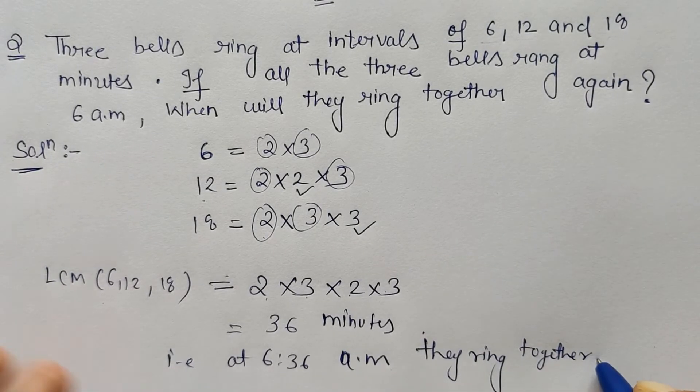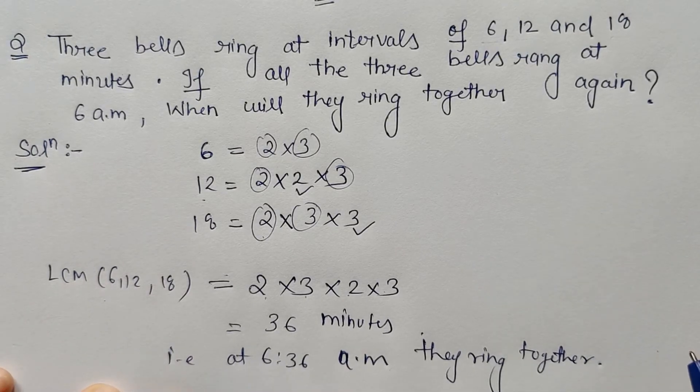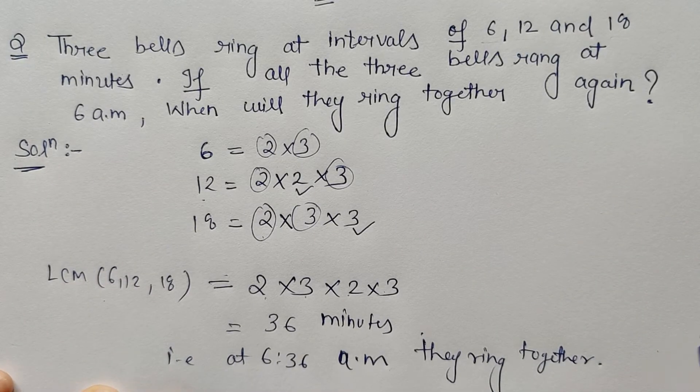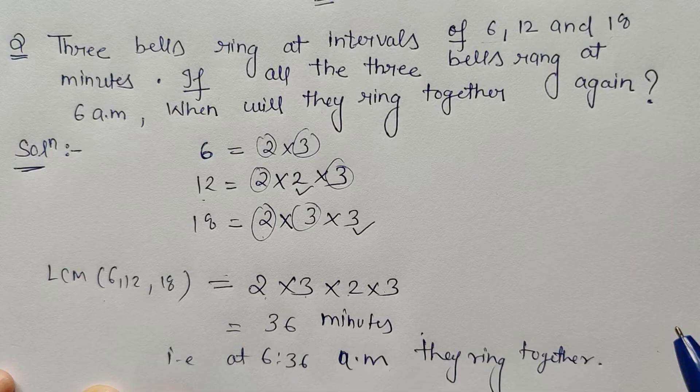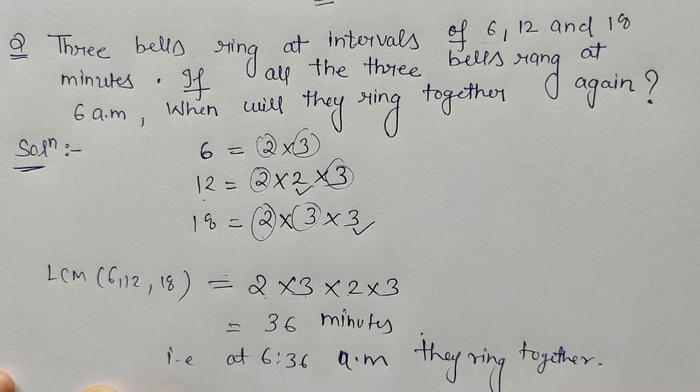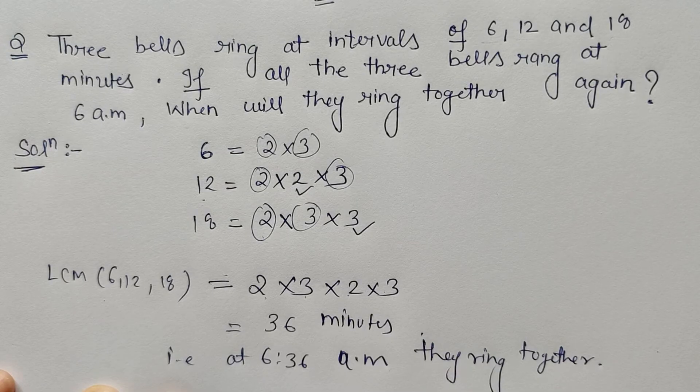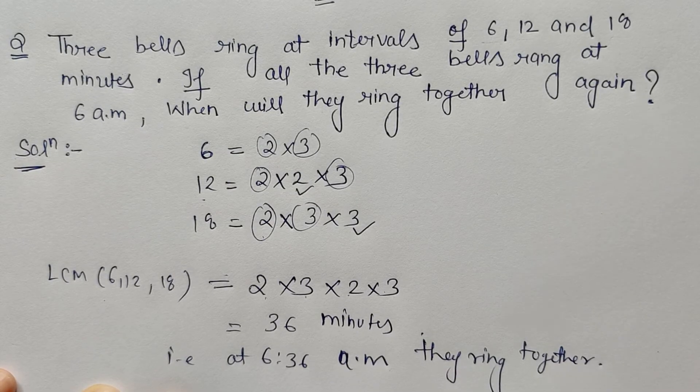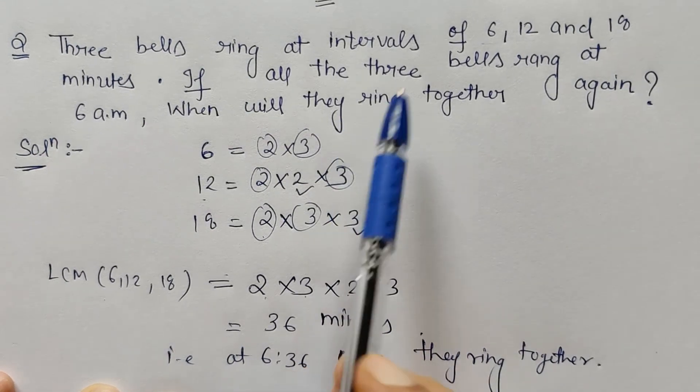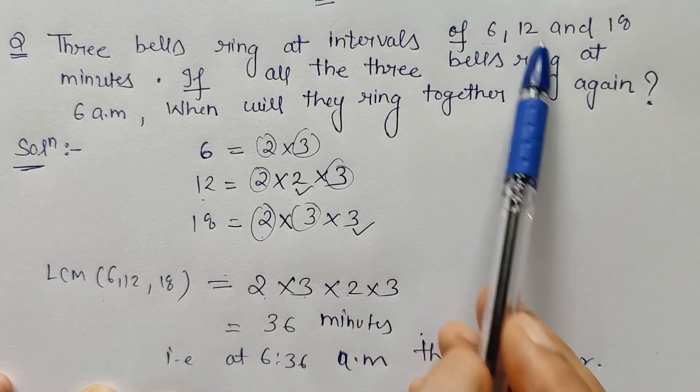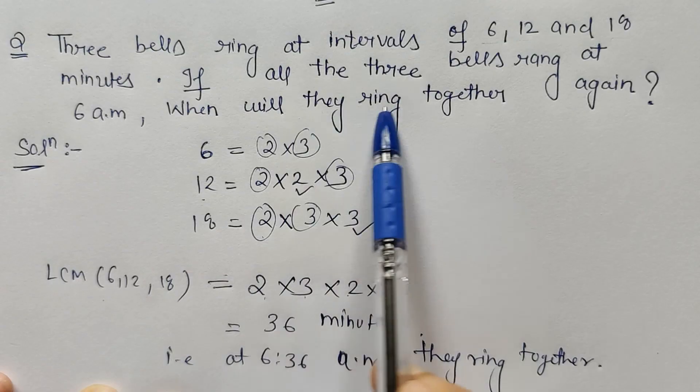If you remember the march past problem, in that problem it was given that equal number of rows and equal number of columns are to be there. So how that can be made or how many extra soldiers or parade members can be removed to make the equal number of rows and columns? In that case we have to apply HCF. But in this problem, since we have unequal timings and we have to find when they will ring together, so here I have to use LCM.